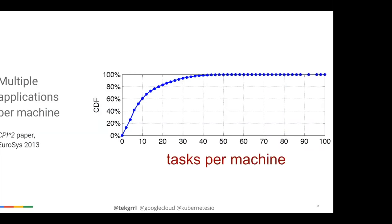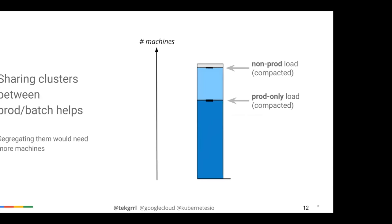This doesn't necessarily sound optimal, but it is, for several reasons. First, we run multiple applications per machine — not dedicated VM slices for specific applications. The sweet spot on the CDF is around nine applications per machine. By sharing clusters between production and batch, we can compress non-prod and production workloads together, getting much better compaction and saving potentially around 25 percent of the machines we run.